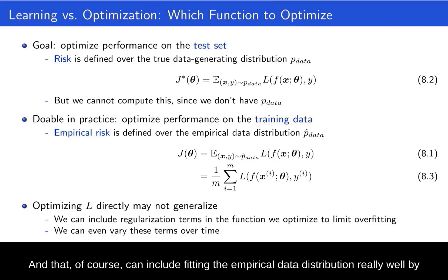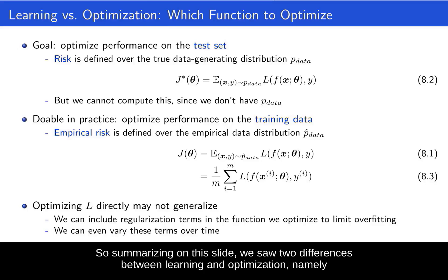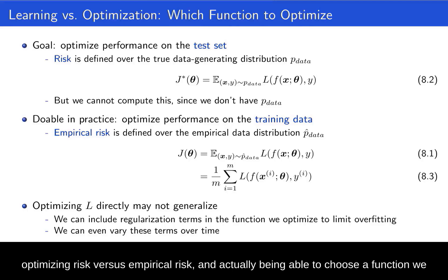And so that's another clear difference between optimization, where you typically have a fixed objective function, and learning in which we actually care about generalization. And we do anything in order to find weights of our neural network that give us good generalization performance. And that can include fitting the empirical data distribution really well by doing gradient-based optimization, but it can also include these additional regularization terms. So summarizing on this slide, we saw two differences between learning and optimization, namely optimizing risk versus empirical risk, and actually being able to choose the function we want to optimize or changing it over time.